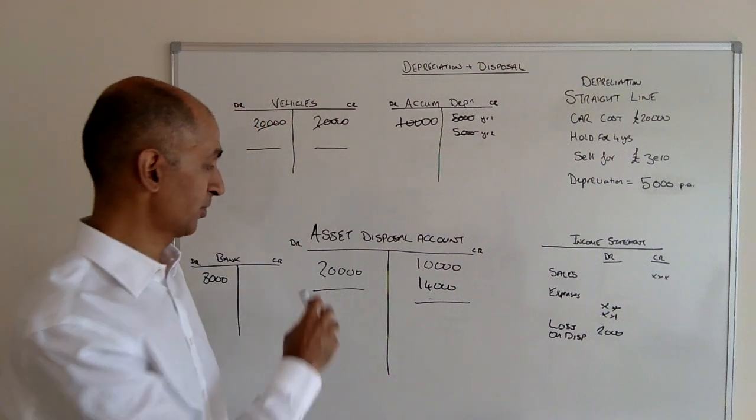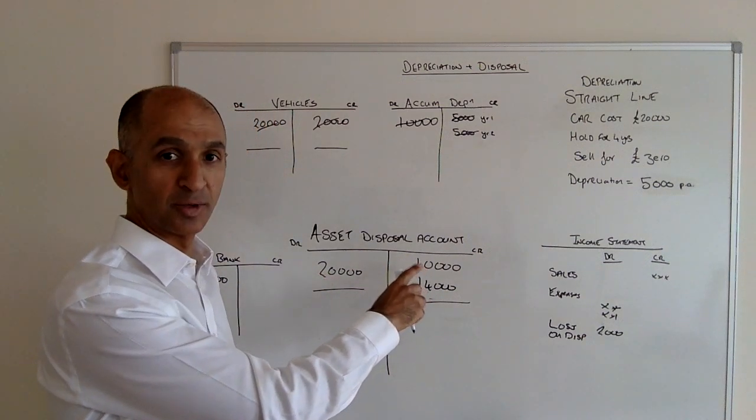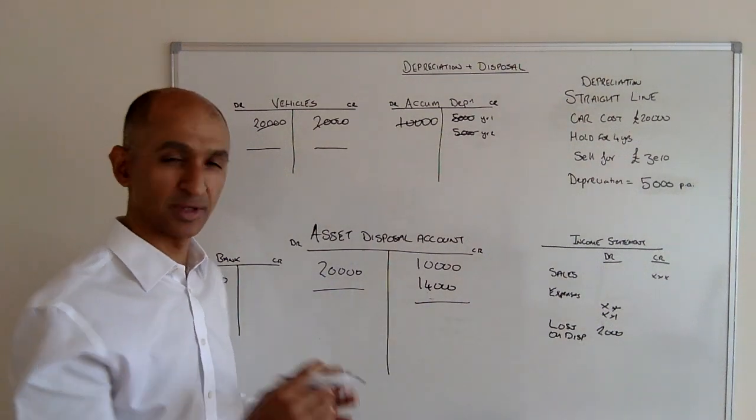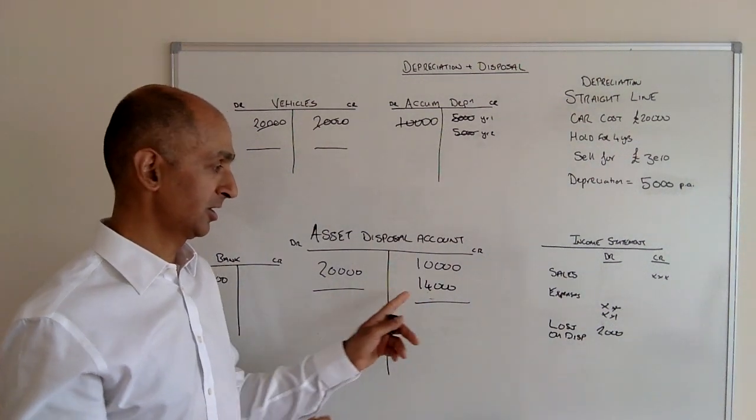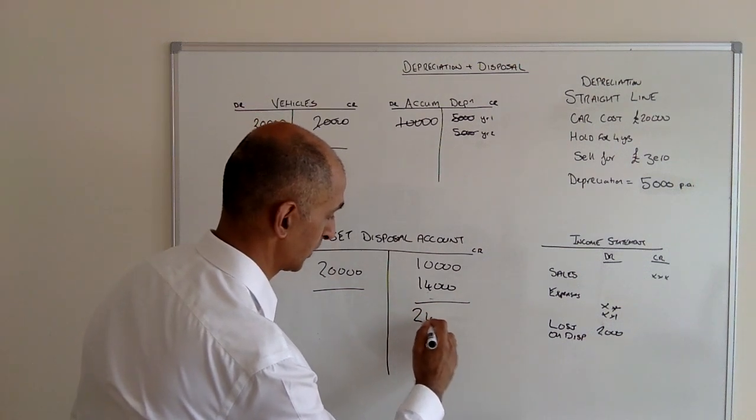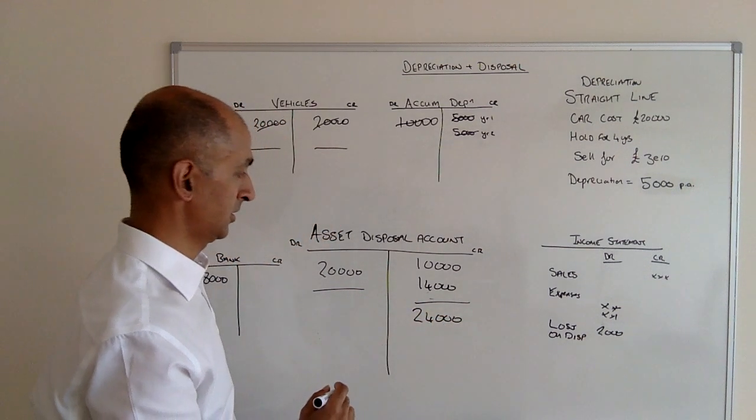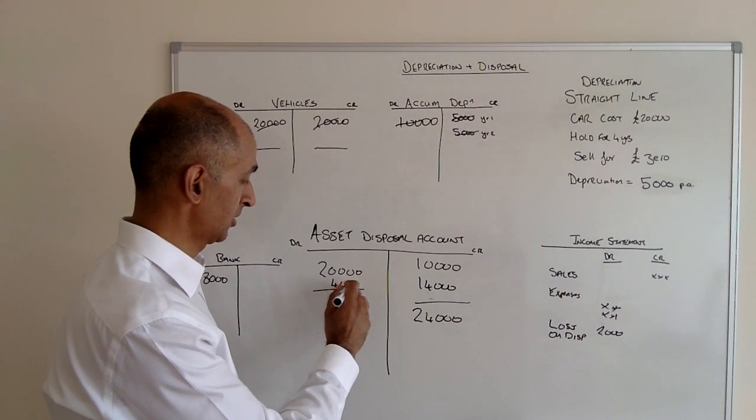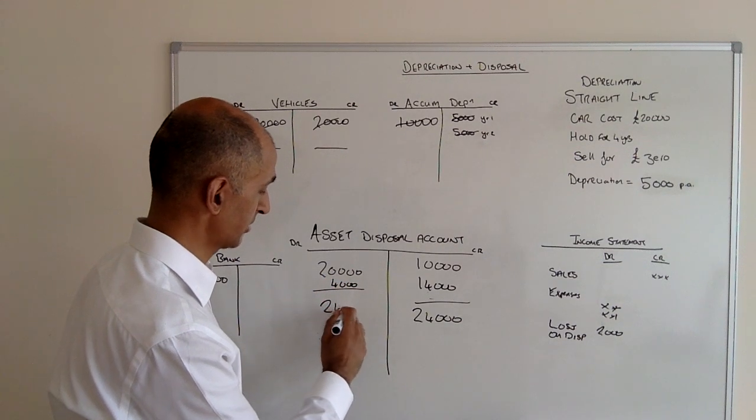We bought it for £20,000. We thought we had £10,000 of value taken out of it, so we think it's probably worth £10,000 now. We managed to sell it for £14,000. So that becomes £24,000. Now all of a sudden we have to put the balancing figure on this side of £4,000 to make £24,000.